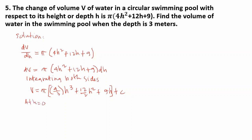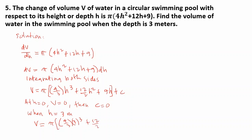At h equals 0, V equals 0, so C equals 0. When h equals 3 meters: V equals pi times (4/3 times 3 cubed plus 12 over 2 times 3 squared plus 9 times 3), giving V equals 367.56 cubic meters.